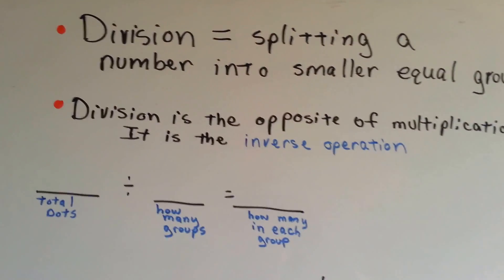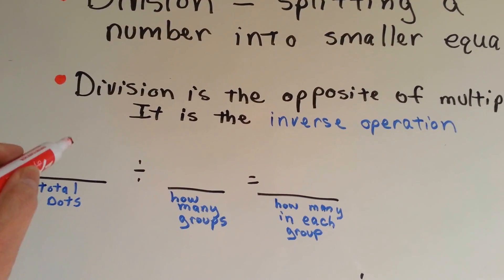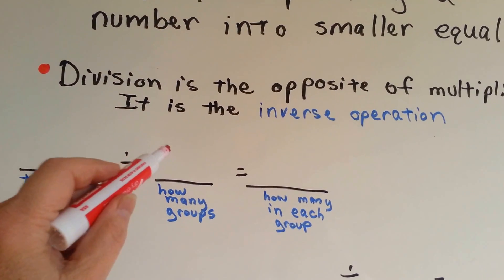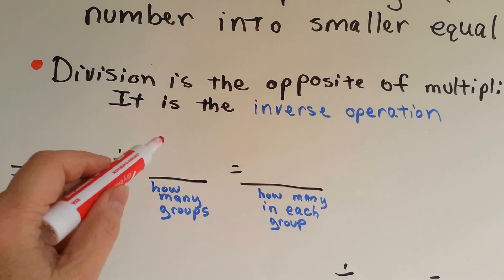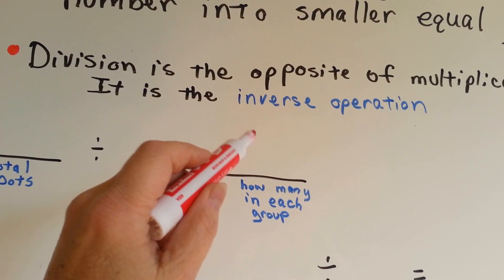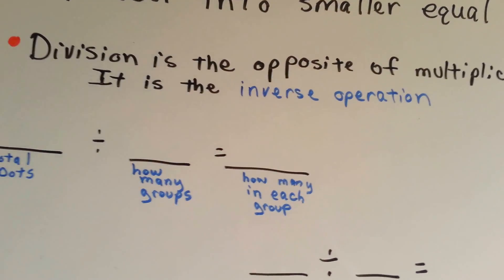What we're going to do is count the total number of dots. On this line, we're going to put how many groups we see, and on this one, we're going to put how many dots are in each group.